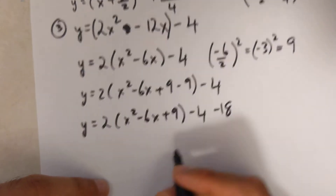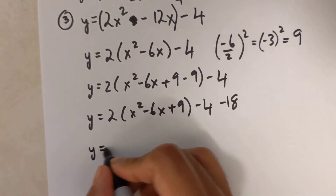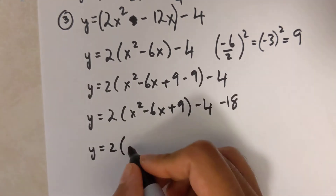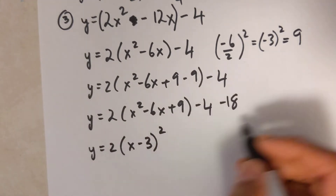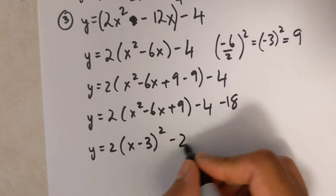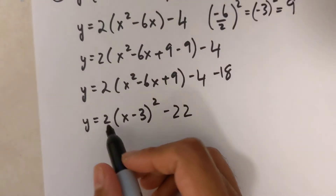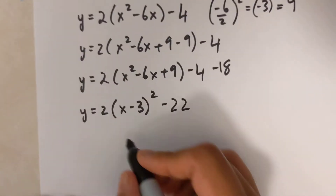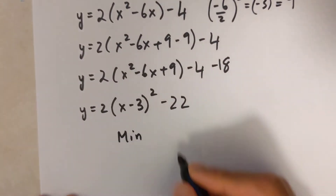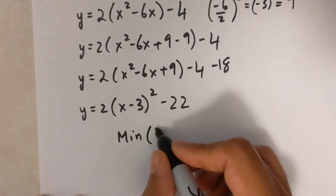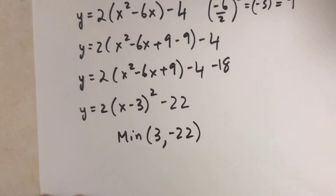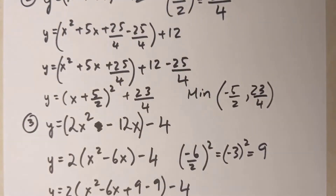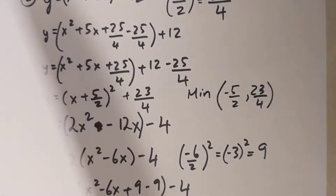The final step: y equals 2 times x minus 3 squared, which gives negative 22 outside. Since the a value is a positive 2, it's a minimum. The vertex is at x equals positive 3, y equals negative 22.